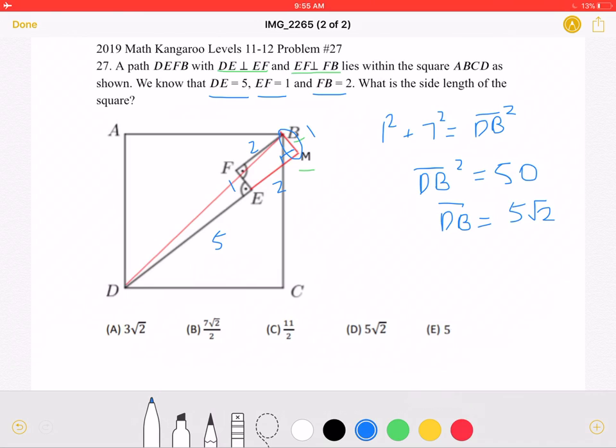But the problem is not asking us for the diagonal of the square, but asks for the side length of the square. So in any square with the side length, let's say x, the diagonal can be written as x square root of 2.